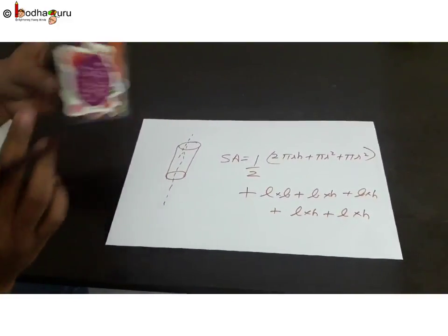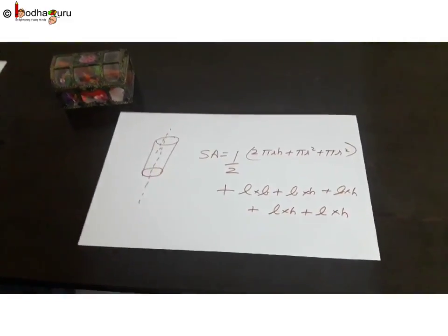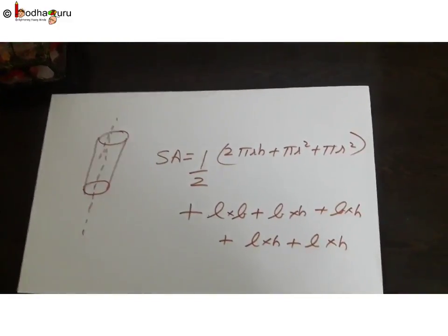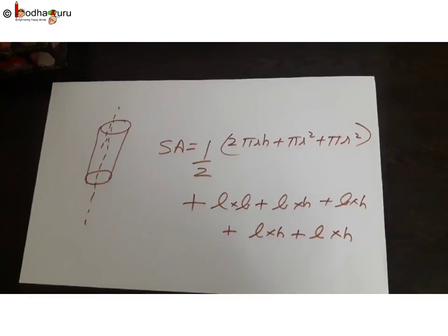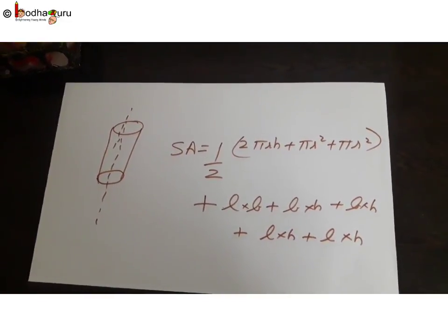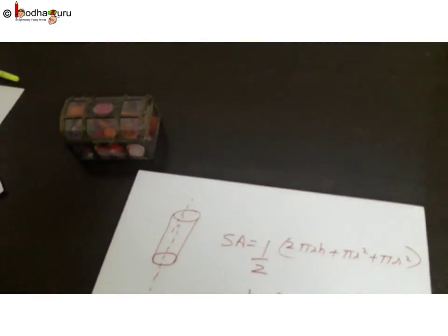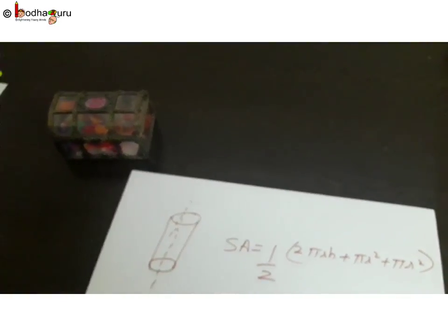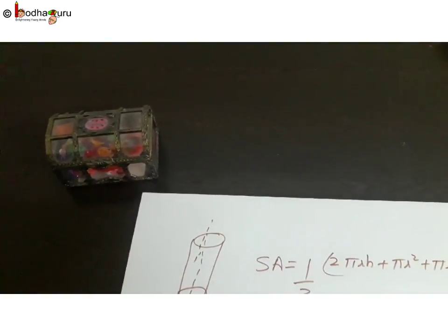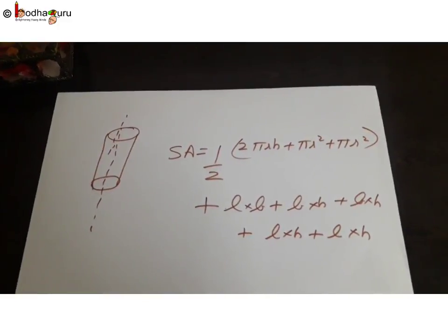So given any 3D shape, observe what are the faces which are visible and calculate the surface area by doing the sum of area of each of the visible faces. That's all in this lesson. Bye bye.